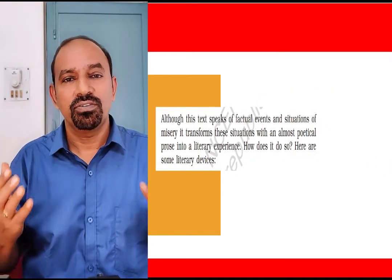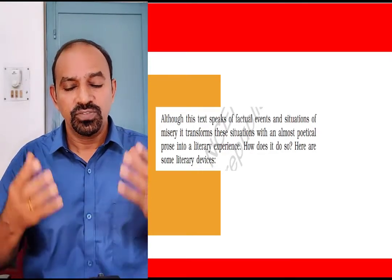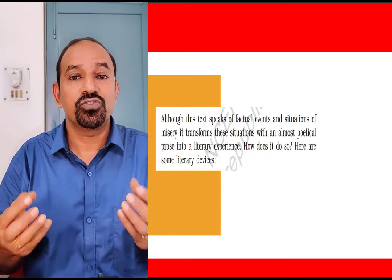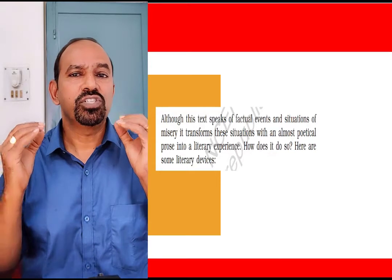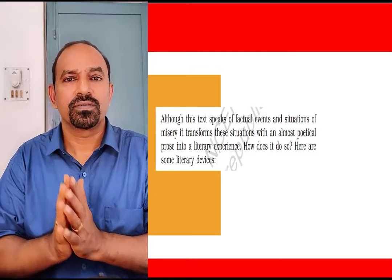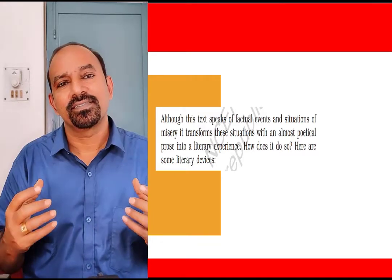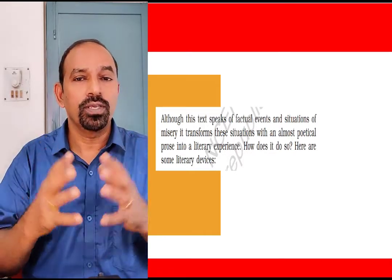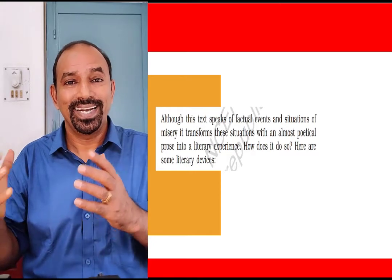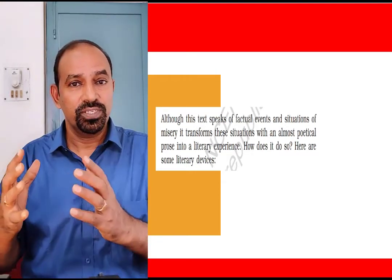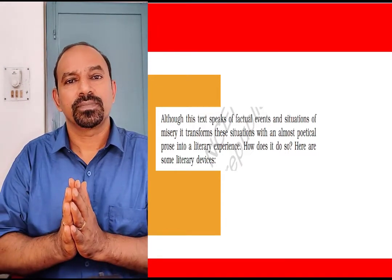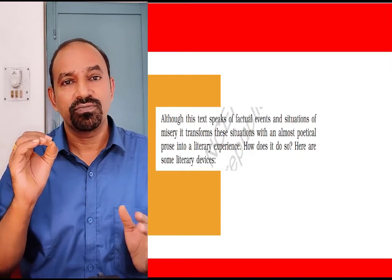First, let us check the literary quality of the lesson 'Lost Spring'. As we know, this is a realistic story — it speaks about factual events and situations of misery. Those factual events and situations of misery are almost transformed into poetic prose. Anees Jung used so many poetic and literary devices in the story, like hyperbole, contrast, paradox, and metaphor. That is the literary significance of the story 'Lost Spring'.